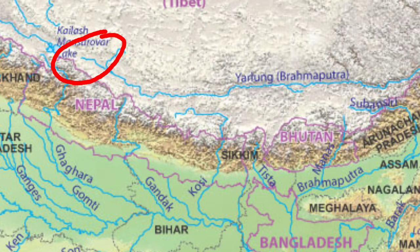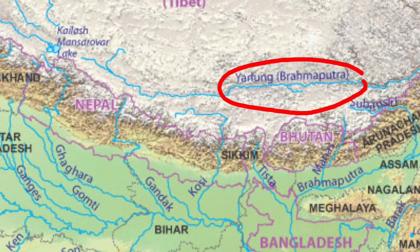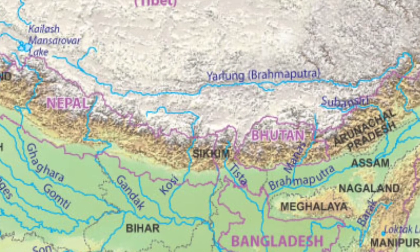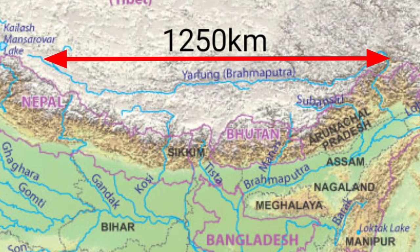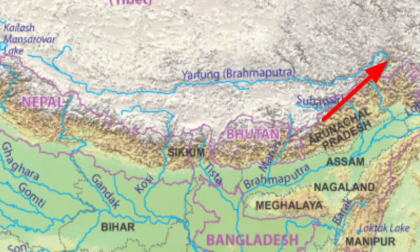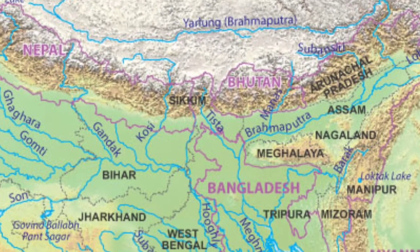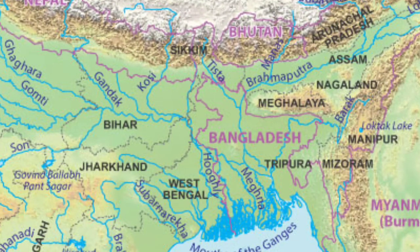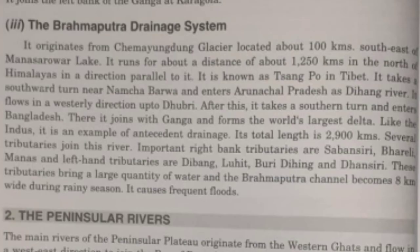The next is the Brahmaputra drainage system. River Brahmaputra originates in the Chemayungdung Glacier near Mansarovar Lake. It flows towards the east, parallel to the Himalayas, under the name Yarlung Tsangpo in China, covering a length of 1,250 kilometers. At Namcha Barwa it takes a sharp bend towards the south, flows into India, and continues up to Dhubri in Assam, after which it enters Bangladesh and joins River Meghna, creating the largest delta in the world.